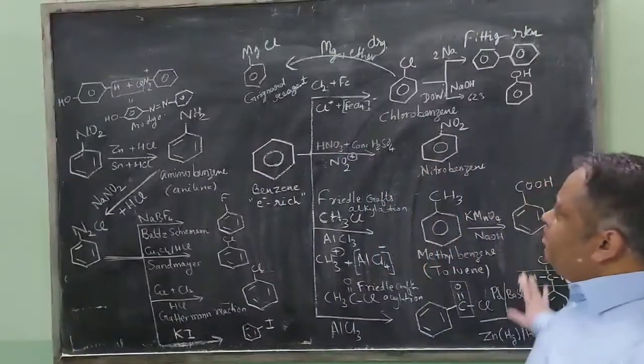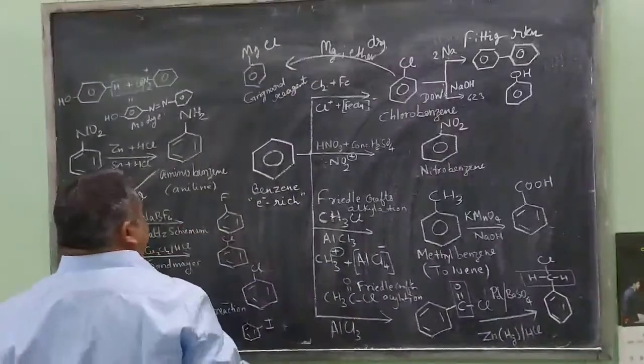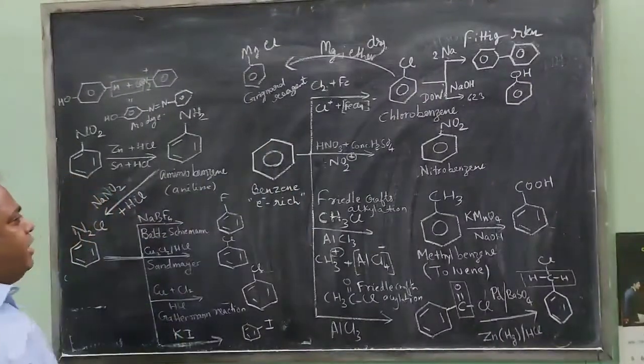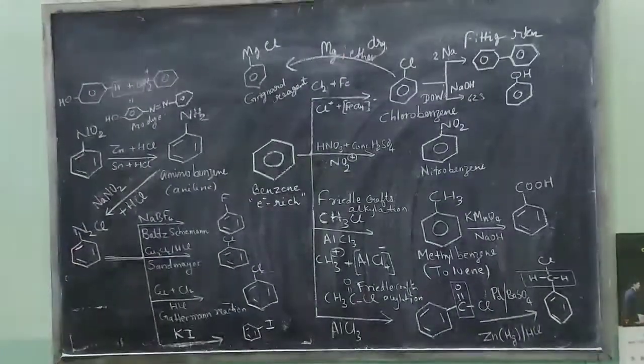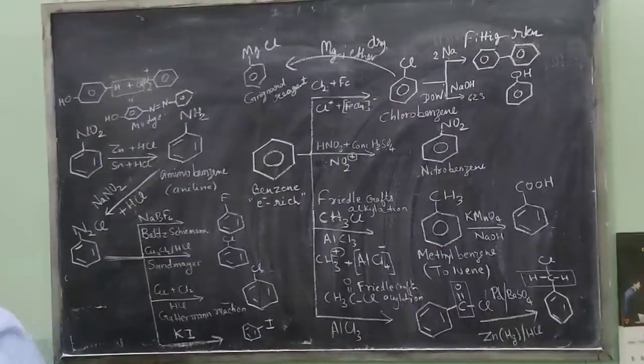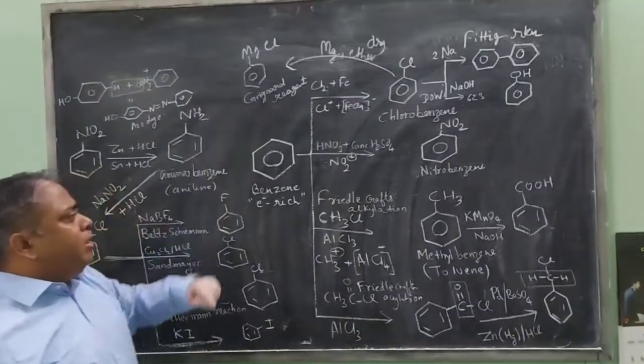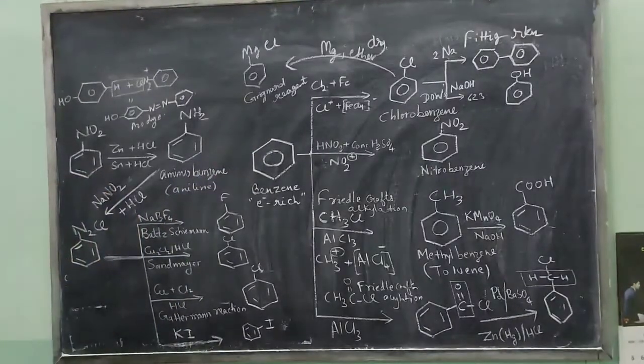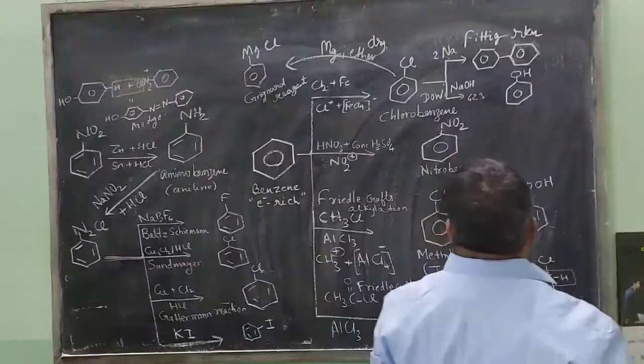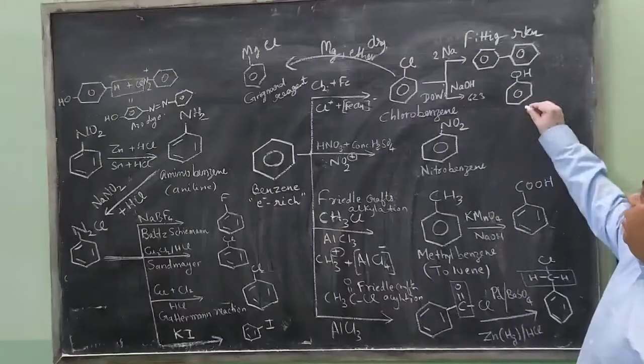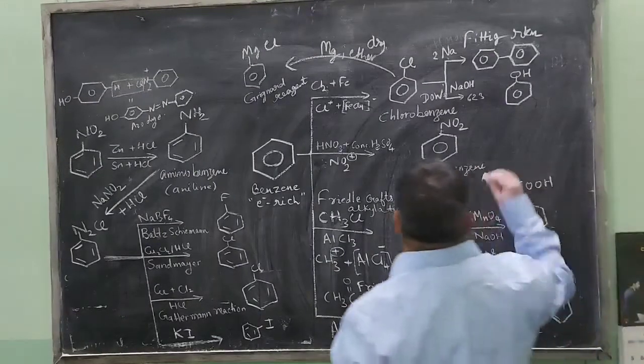For example, somebody tells me make a reaction chart from phenylmagnesium bromide or benzoic acid. What I will do, I can start making it by using some carbonyl compound. Somebody asks me to prepare a conversion chart from phenol. Then I can start making it from phenol, like you can call Reimer-Tiemann reaction in this.